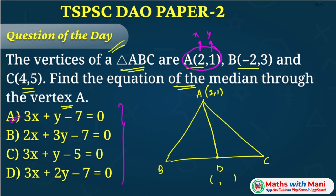Otherwise, you have to find out the equation using the formula. So B is (-2,3) and C is (4,5). The midpoint is: (4 minus 2) equals 2, divided by 2 is 1; and (5 plus 3) equals 8, divided by 2 is 4. So the midpoint D is (1,4).